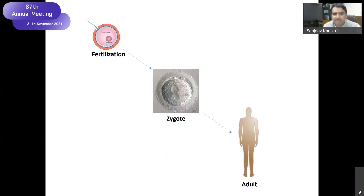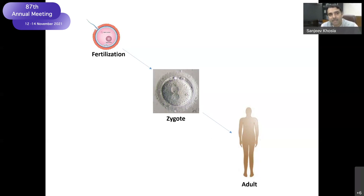We all start our journey as a single cell — a zygote — which forms by the fusion of the sperm nucleus, bringing in contribution from the father, and the egg, which brings in genetic information from the mother. That fusion leads to a cascade of events which finally results in an adult multicellular organism.